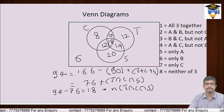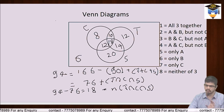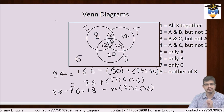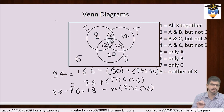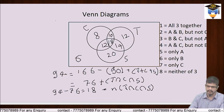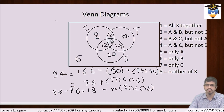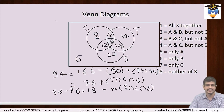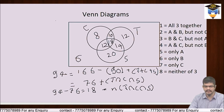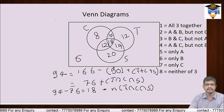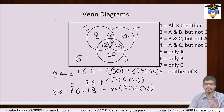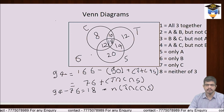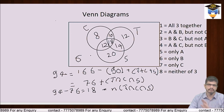Cross-check karte hain: 8 + 10 = 18, + 12 = 30, + 12 = 42, + 18 = 60, + 14 = 74, + 20 = 94, + 6 (none) = 100. Sab log cover ho gaye. Ab bas numbers calculate karne hain.